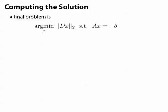So finally we end up with an optimization problem that says minimize the 2-norm of Dx, subject to Ax equals negative b, or in other words, find the connection that's as close as possible to Levi-Civita, subject to the condition that parallel transport is path independent.